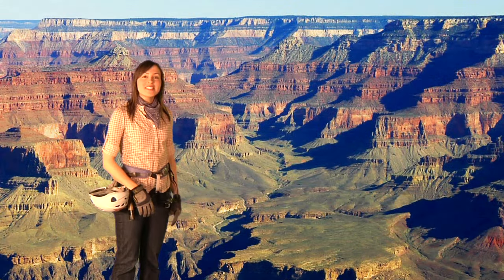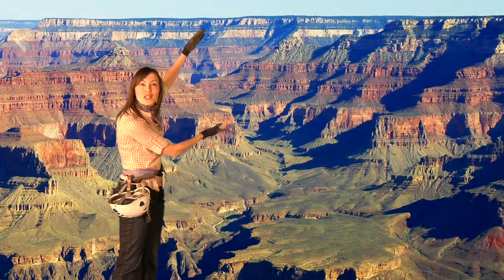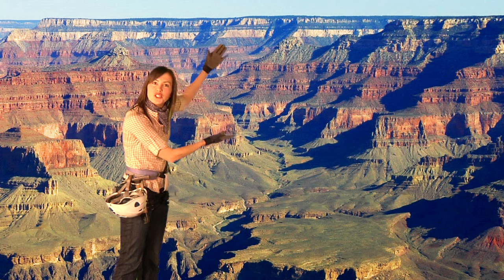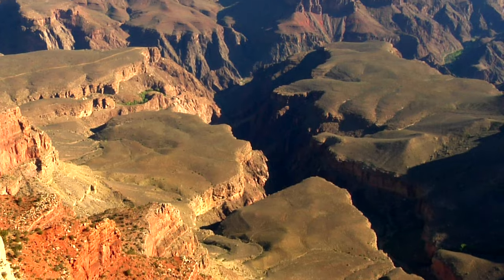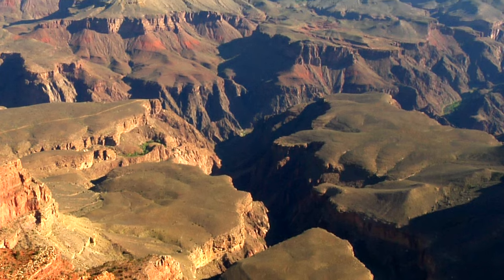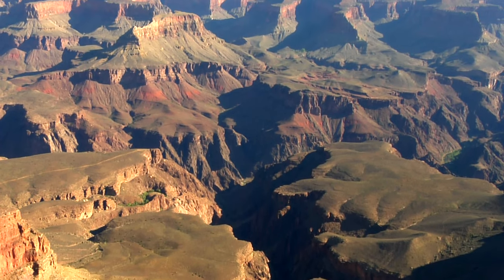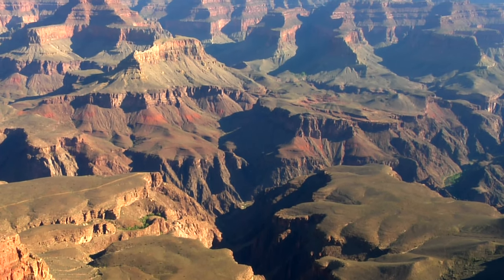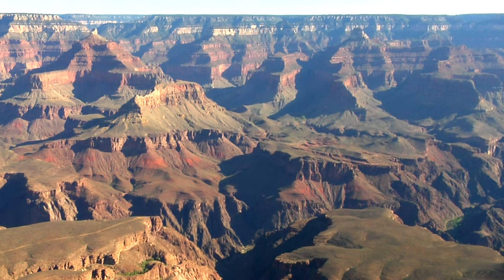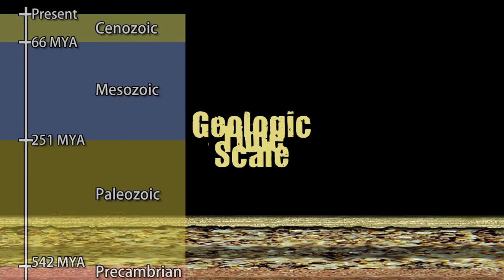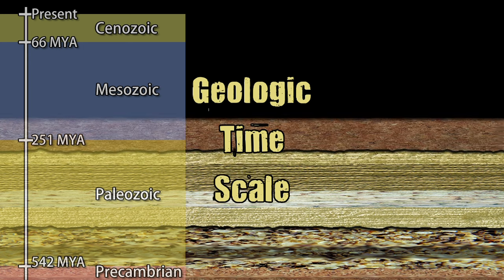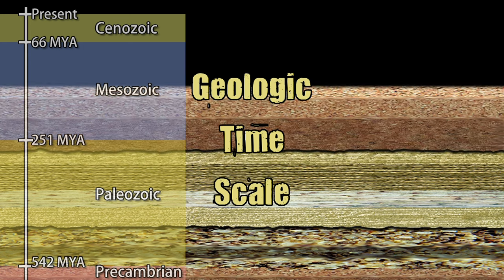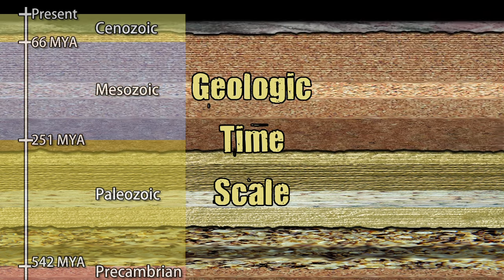From a distance, these rock layers look like pages of a giant book. Each layer of sediment was deposited during a certain geologic period, and like pages of a book, together they tell a bigger story — the history of our planet. If you stack all the layers of sedimentary rock together since the beginning of life on the planet, they represent what scientists call the geologic timescale.